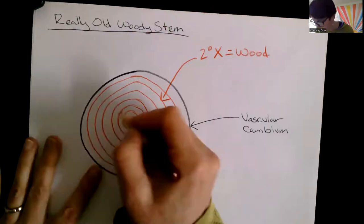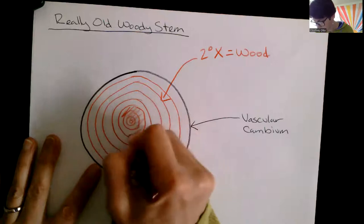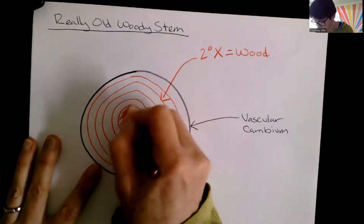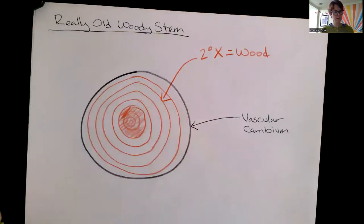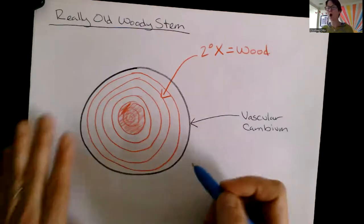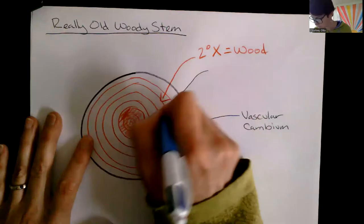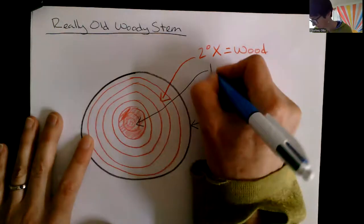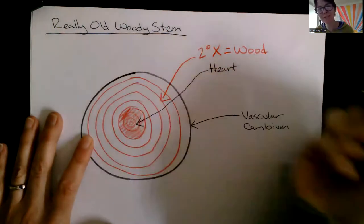You may have noticed that in some really old woody stems there's a darker section in the center. I'm just going to shade this in. Now this is still secondary xylem, but this darker region on the inside, something they call heartwood. It's in the heart of the tree, at the center of the tree.